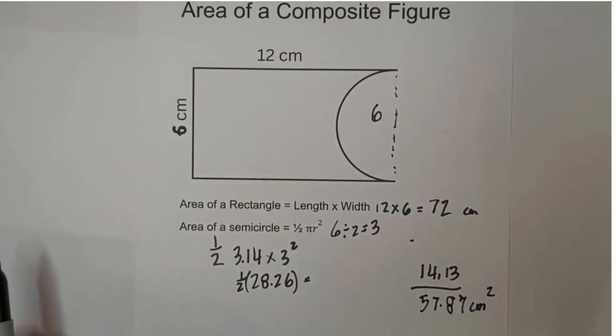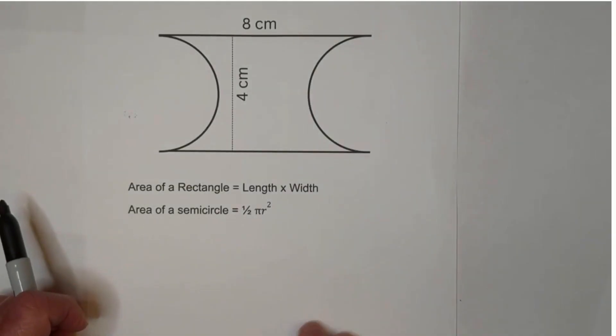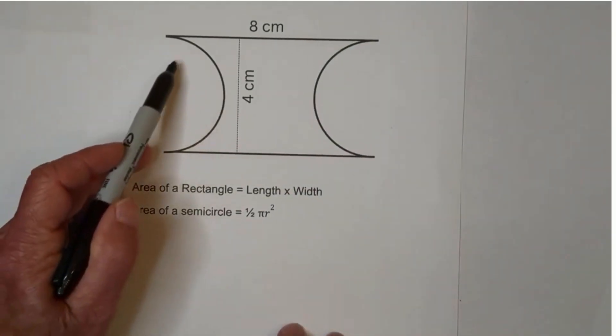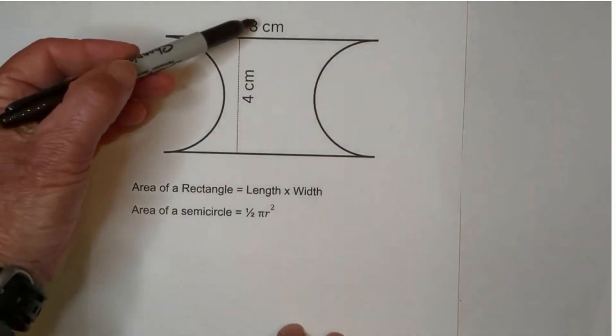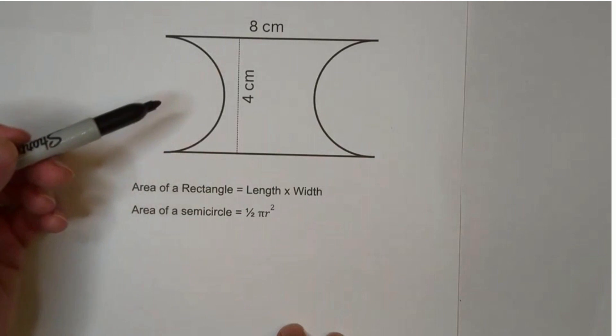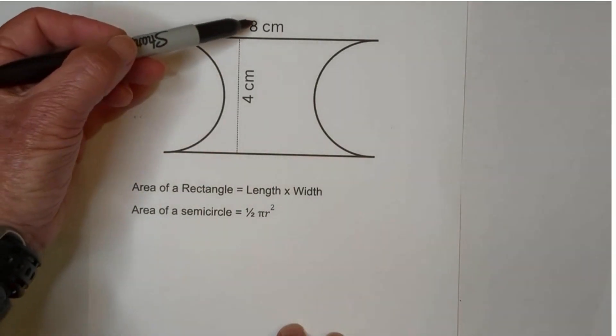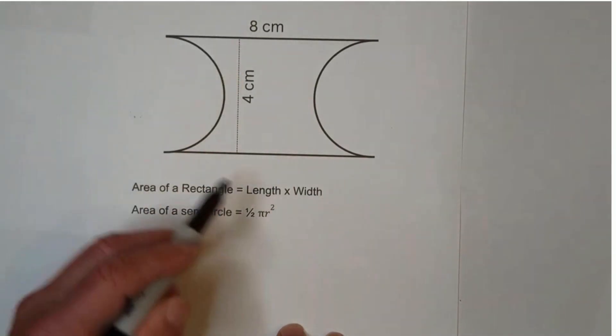Let's look at another example. What are we going to do with this one? This one we have two semicircles that we're going to have to subtract, and we have a rectangle. The dimensions of the rectangle here are 8 and 4. So let's get started.